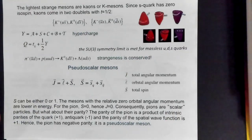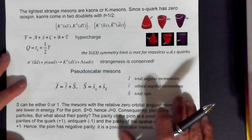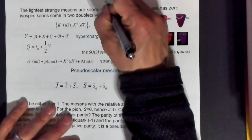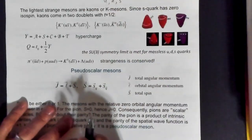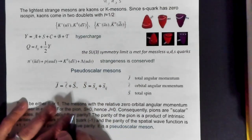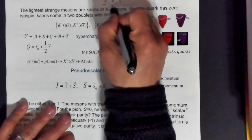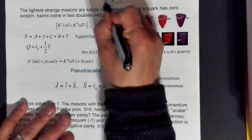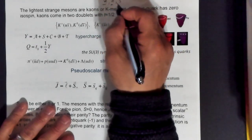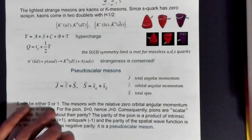We're now talking about mesons involving the light quarks — namely the up, down, and strange quarks. Last time we talked about pions that involve only the up and down quarks: things like U-Dbar, D-Ubar, U-Ubar, D-Dbar, and so on.